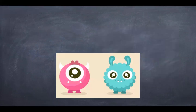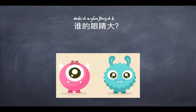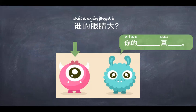The next picture shows two little monsters. The question is, 谁的眼睛大? 她的眼睛大. Did you get it right? So let's complete this sentence: 你的眼睛真大.